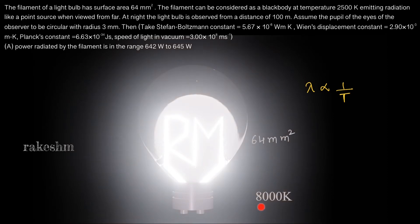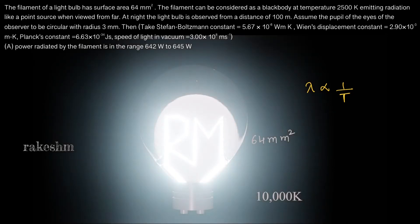Let us now increase the temperature of this black body to 8000 Kelvin. As the temperature is increased, you can see a very light blue tint to the color. This is because at higher temperatures the lambda value is less, and in the visible region less lambda corresponds to a more bluish color. Increasing the temperature further to 10,000 Kelvin, the emitted light has a clear blue tint and the emitted power has also increased considerably.